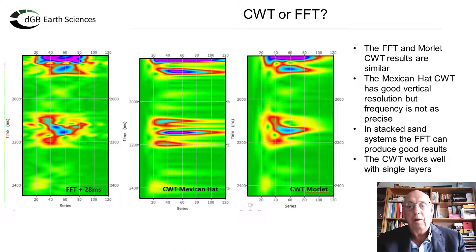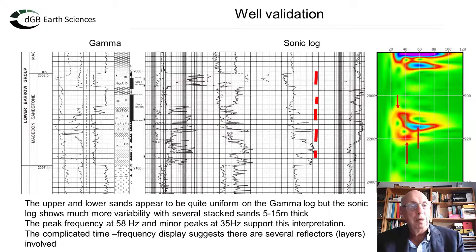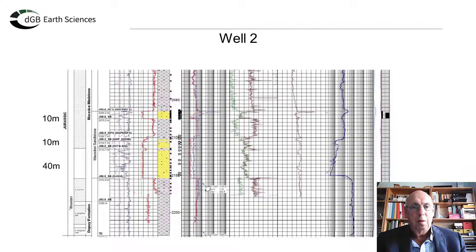The RGB display at the well location shows white colour, indicating even representation of thick, thin and medium sized beds. A two-way time versus frequency plot at the well location peaks at about 45 Hz, and at 2400 m/s this gives a wavelength of 53 m and a tuning thickness of 13 m. There does not appear to be low frequency information at 10 to 12 Hz where the 60 m sand is expected. Looking at the sonic log, there is much more variability than the gamma log, explaining the strong peak frequency between 45 and 60 Hz — the thick sands are actually made of thinner sands of 12 to 15 m.